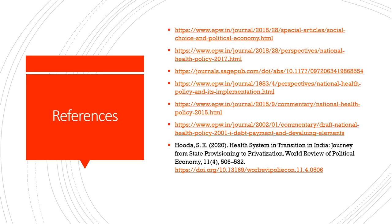In today's lesson, we discussed three typologies of healthcare models in health economics literature, Arrow's Impossibility Theorem and its relevance to designing national health policies, and the three national health policies of India and how they have changed the health landscape over the last 40 years. I have extensively used journal articles for today's lesson and will put additional textbook references on the portal. See you in the next class, thank you.